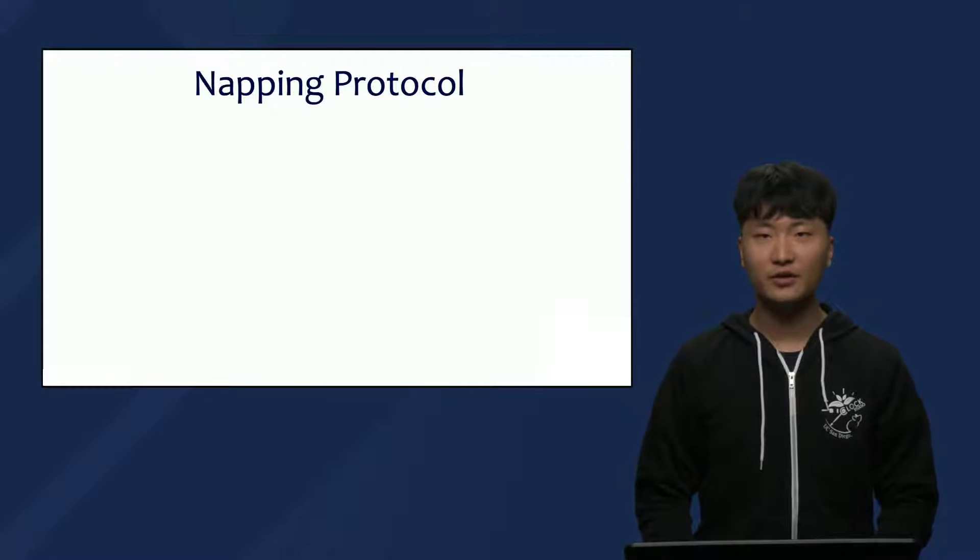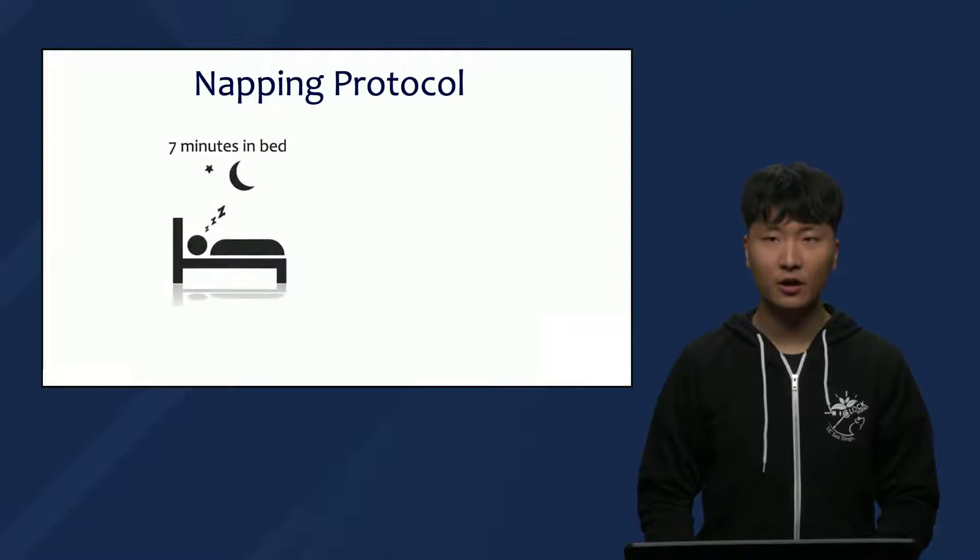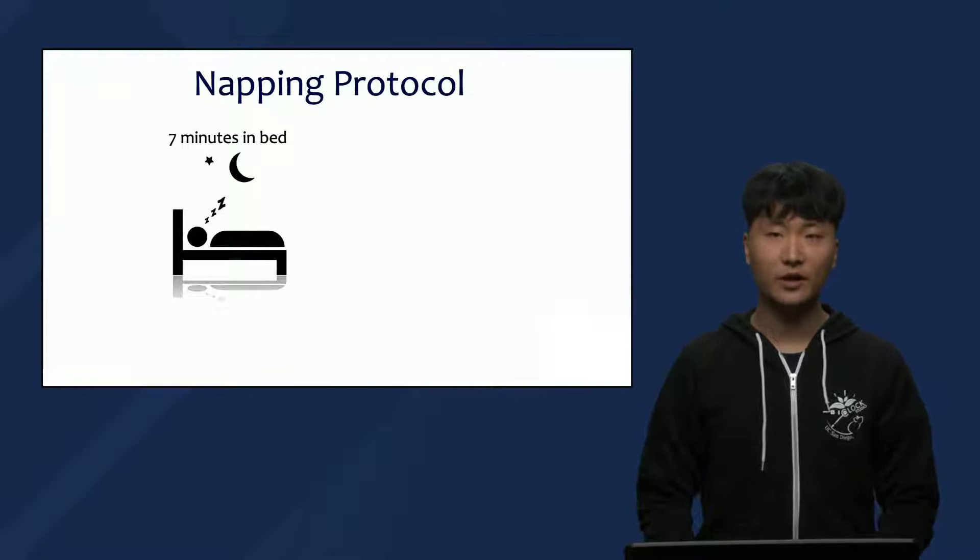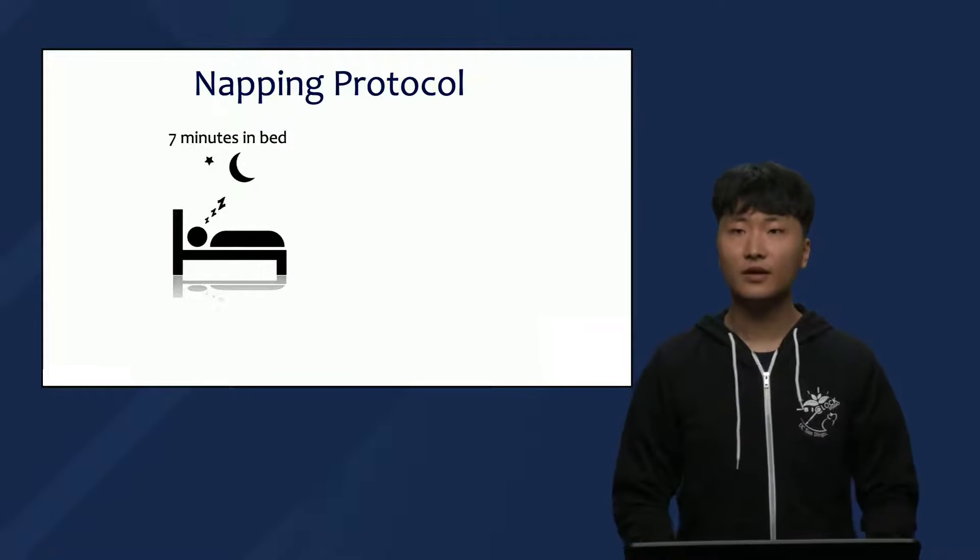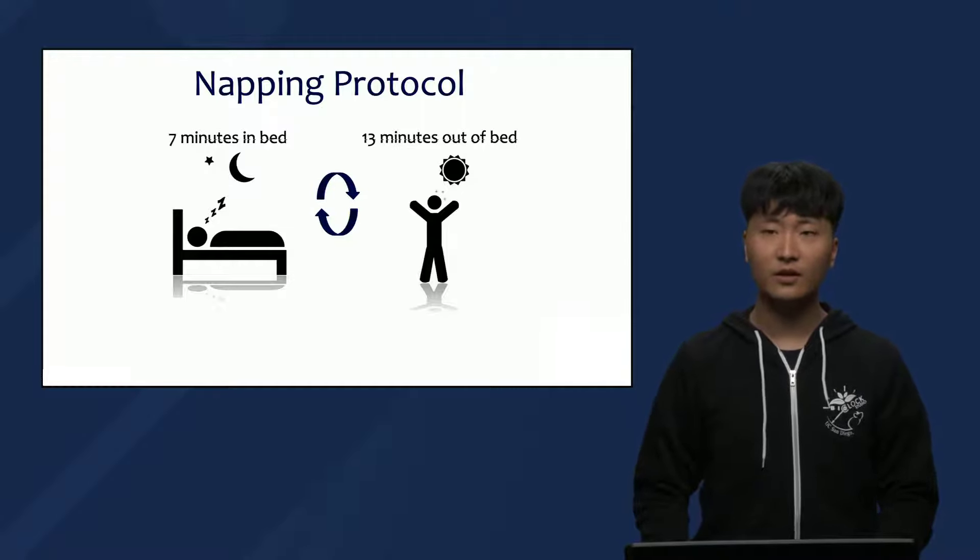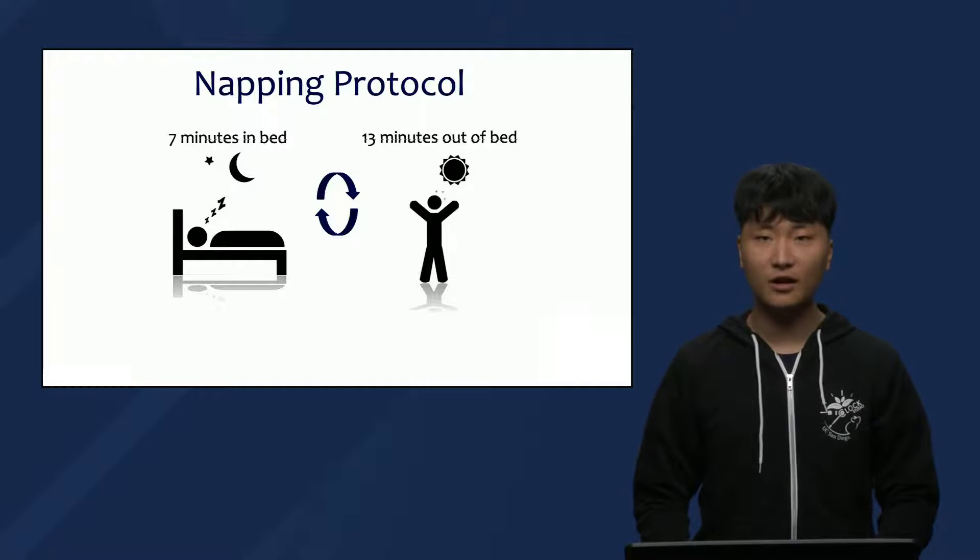In this study, participants were given a seven-minute-long sleep opportunity where they were encouraged to sleep in a quiet dark room. Then, for the next 13 minutes, they were forced to be awake in the light. This cycle was repeated ceaselessly for the whole 36-hour study period. This kind of study design is called a napping protocol.